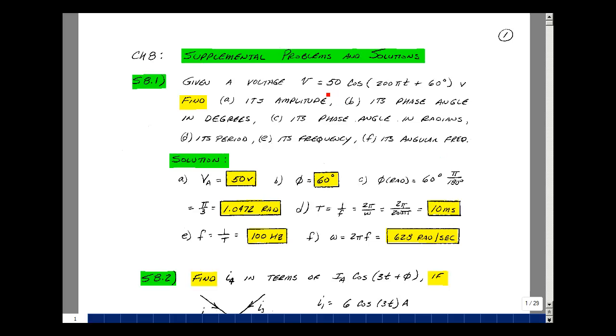The amplitude is right here. It's 50. The phase angle in degrees is right here at 60 degrees. Now to convert that to radians, we've got to multiply by pi over 180, and that's 1.0472 radians.